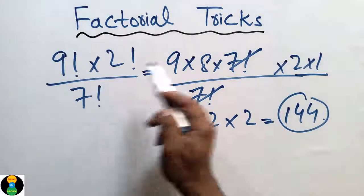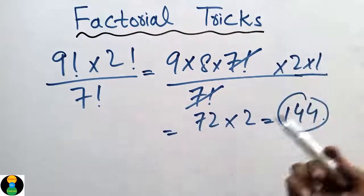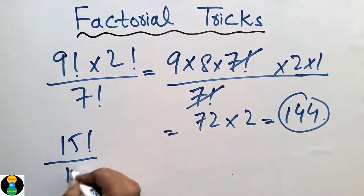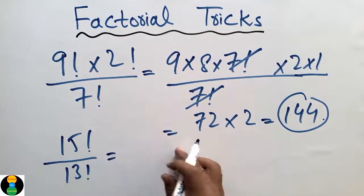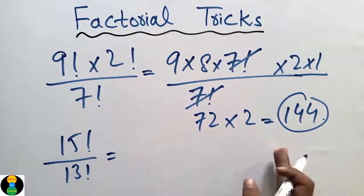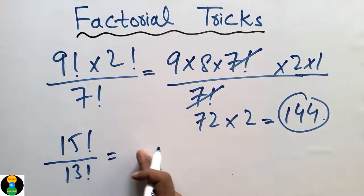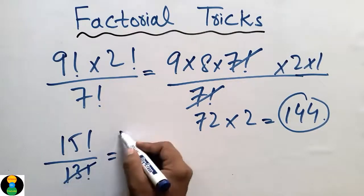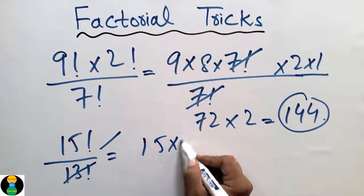If this is another example, if you are given this type of problem, we don't need to solve the whole question. How to do? We know that the 13 factorial will be cancelled with the 13 factorial. Just multiply these two quantities: 15 into 14.